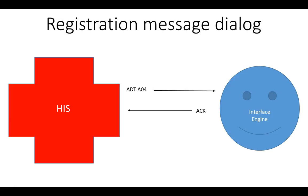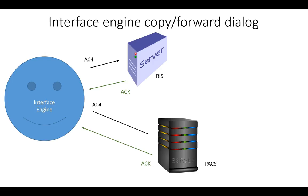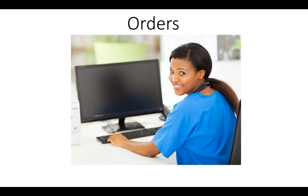Registering a new patient in the HIS will trigger an outbound ADT A04 message to the interface engine. The interface engine will validate the message structure and send an ACK message back to the HIS. A new visit for a new ailment gets a full registration, which is why it's an A04 message. Had the patient been previously treated for this condition, the ADT message would be an A01, which is an admit/visit notification. The interface engine will duplicate the A04, format it for the RIS and PACS, send each system the correctly formatted message, and they will answer back with an ACK.